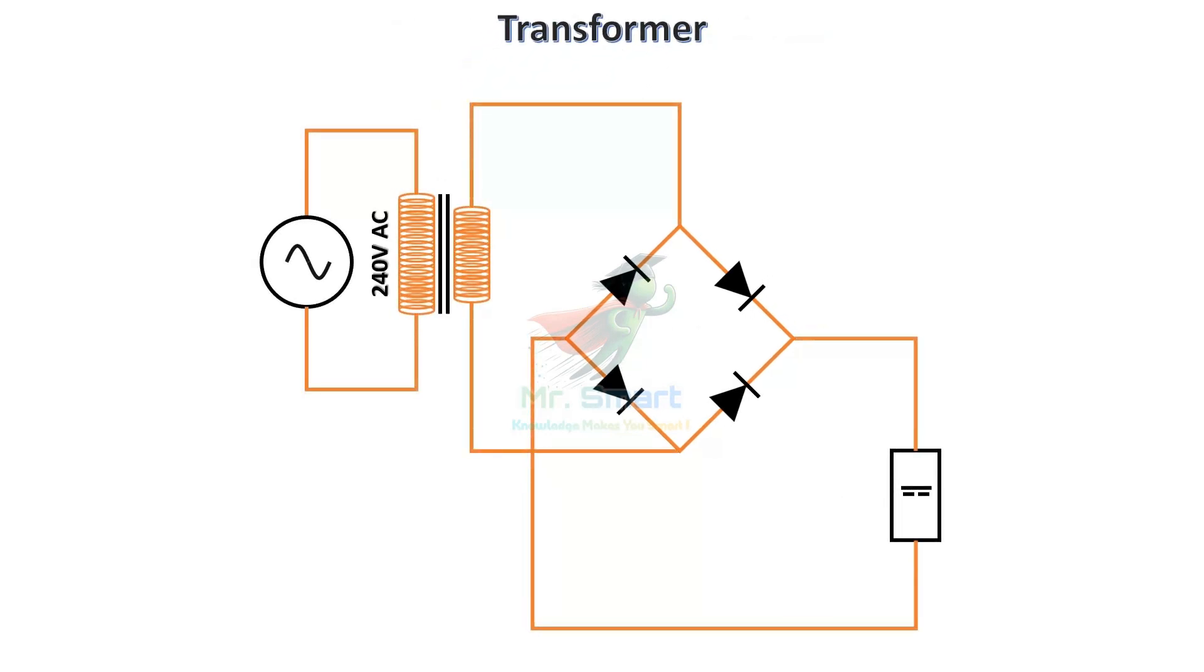The transformer changes the input voltage to the desired level. For example, it might step down high-grid voltage to a safer level for the circuit.